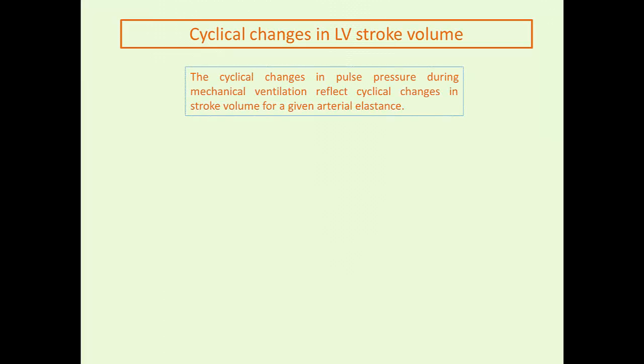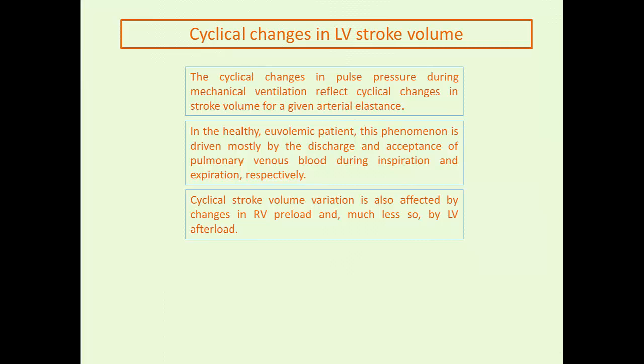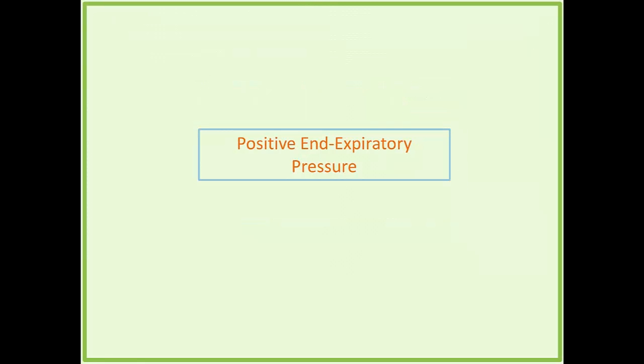In the healthy euvolemic patient, this phenomenon is driven mostly by discharge and acceptance of pulmonary venous blood during inspiration and expiration respectively. Cyclical stroke volume variation is also affected by changes in RV preload and much less so by left ventricular afterload. That was it for mechanical breathing in the normal healthy patient, and now we're going to talk about what happens when you add a little bit of positive end-expiratory pressure in this final portion of Chapter 3.